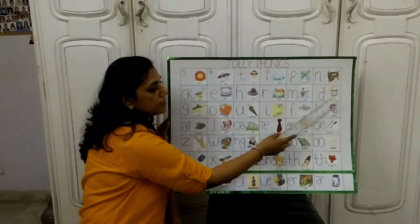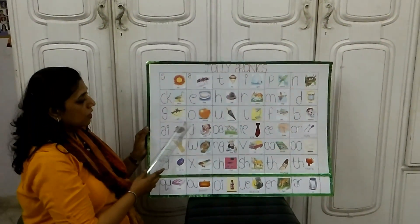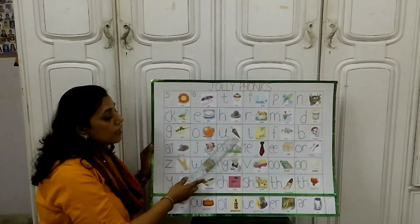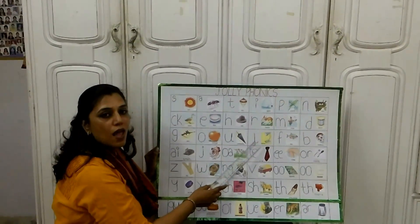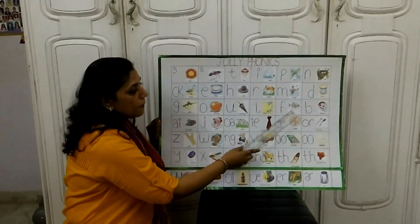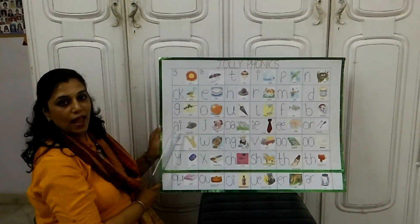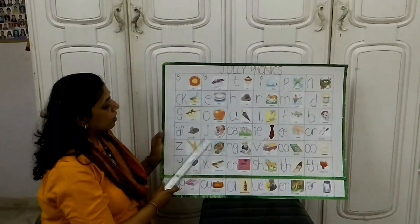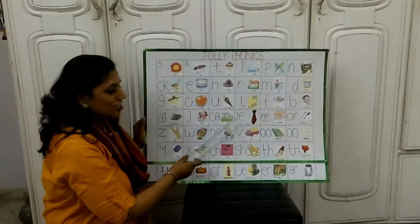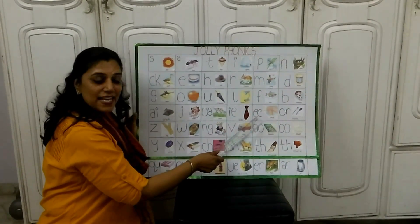D as in drum. G as in gun. O as in orange. U as in umbrella. L as in lamp. F as in fish. B as in balloon. A as in tree. J as in joker. OA as in goat. I as in tie. E as in knee.